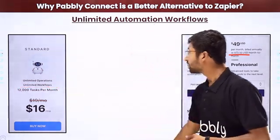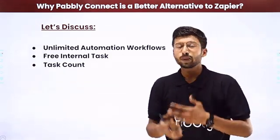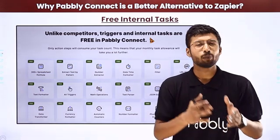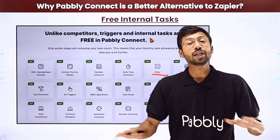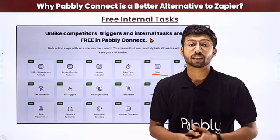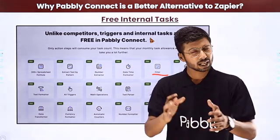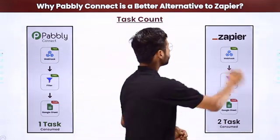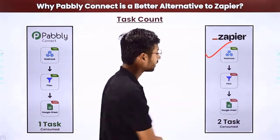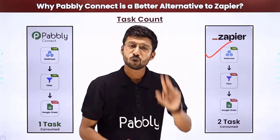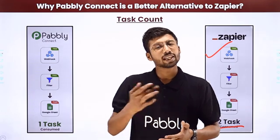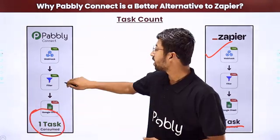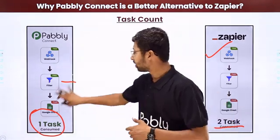The next point is free internal tasks and task count — these two are correlated. Pabbly Connect offers free internal tasks, meaning tools like the date-time formatter, number formatter, filter module, number extractor, and all triggers do not consume your paid task count. For example, a workflow using webhook, filter, and Google Sheets consumes two tasks in Zapier but only one task in Pabbly Connect, because the filter module is free.